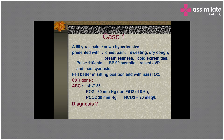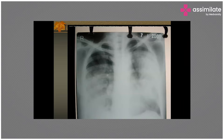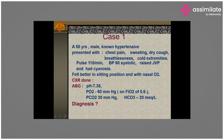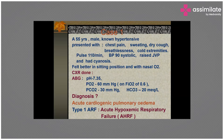Dr. Indumati has written the answer. On the X-ray you can see homogeneous opacities bilaterally, so this is a case of bilateral pneumonia and we can call it ARDS. The PO2 is just 60 on 60% FiO2, so the PaO2/FiO2 ratio comes to around 100, placing this in the severe category of ARDS where the PF ratio is less than 100.